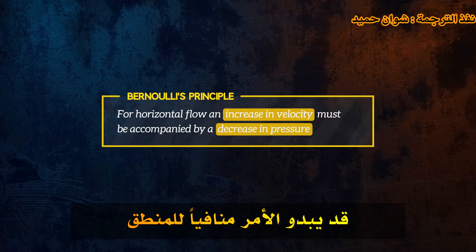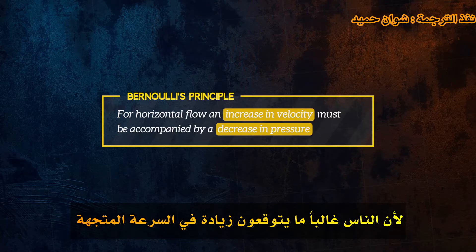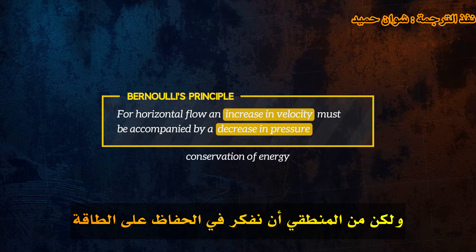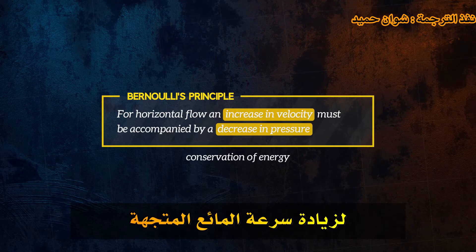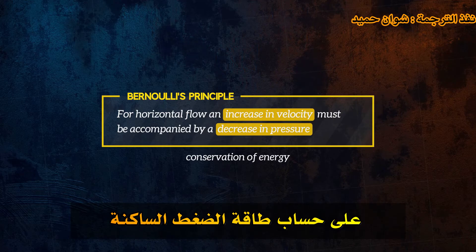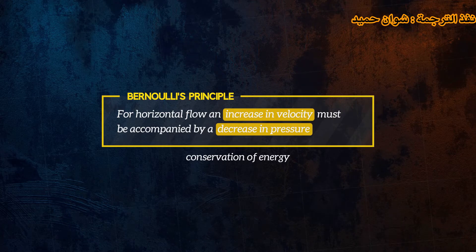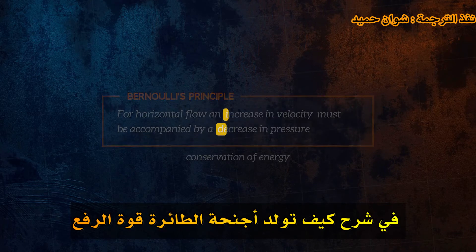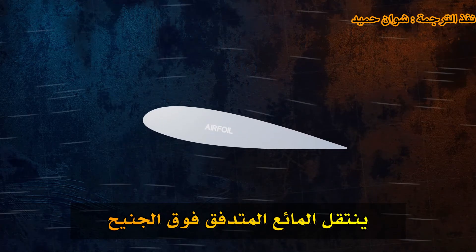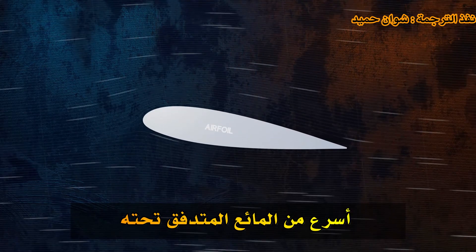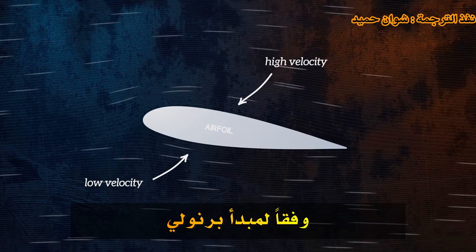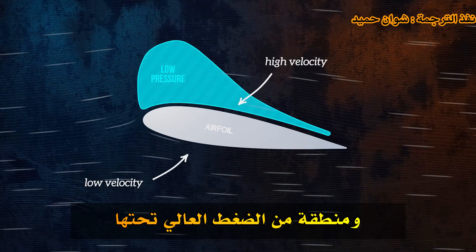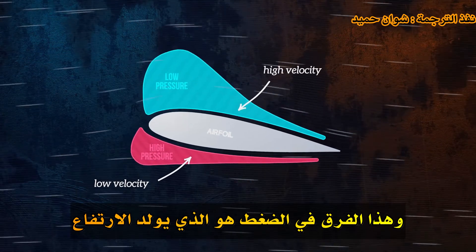It can seem counterintuitive, because people often expect an increase in velocity to result in a corresponding increase in pressure. But it makes sense if we think about the conservation of energy. The energy required to increase the fluid velocity comes at the expense of the static pressure energy. Bernoulli's Principle shows up in a lot of different places. We can use it to help explain how plane wings generate lift. Fluid flowing over an airfoil travels faster than fluid flowing below it. According to Bernoulli's Principle, this creates an area of low pressure above the airfoil, and an area of high pressure below it. And it's this pressure difference that generates lift.